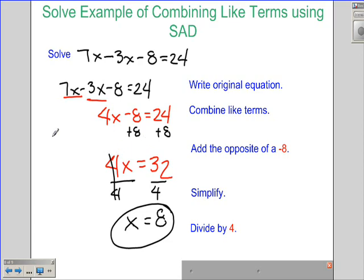So now to check this or to verify my answer, I'm going to go back up to my original and plug in 8 everywhere I see an x. So I have 7 times 8 minus 3 times 8 minus 8 equals 24, and that's a question. I want to verify that.